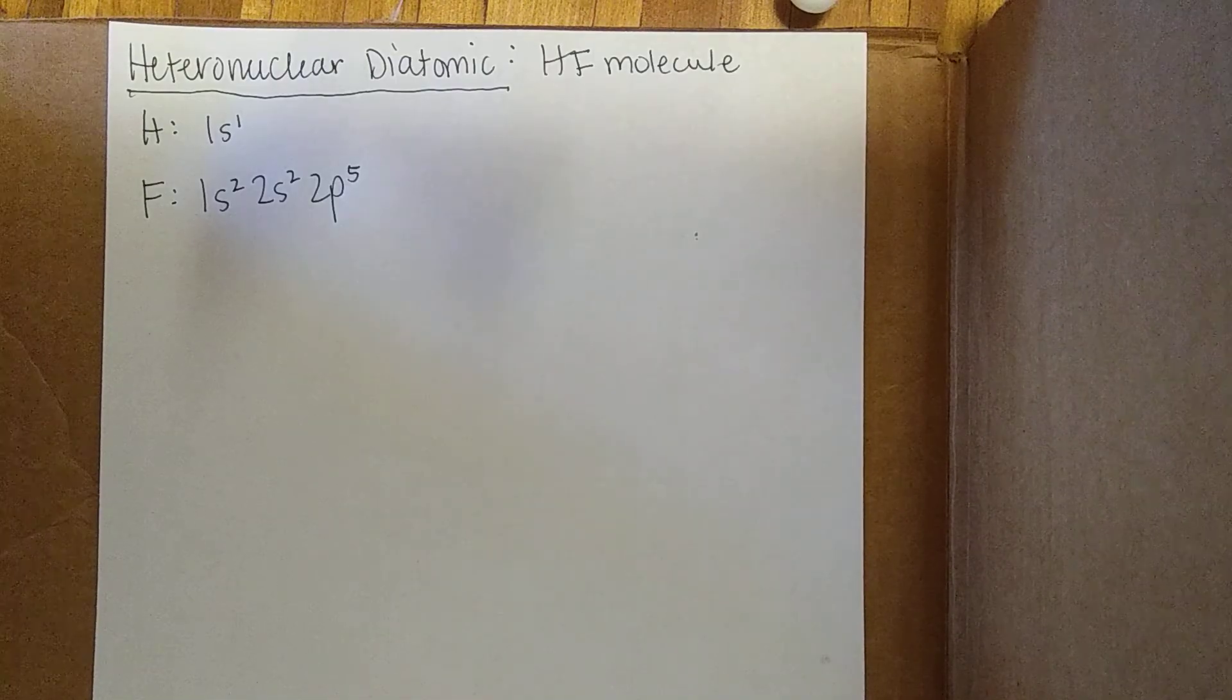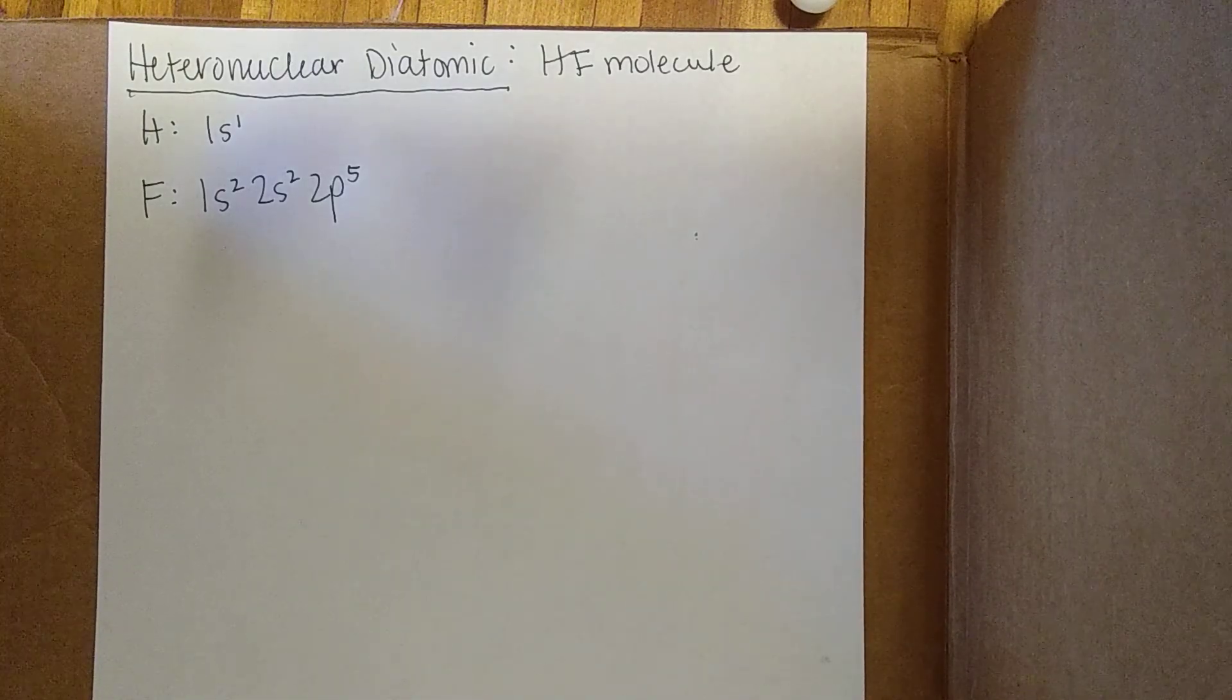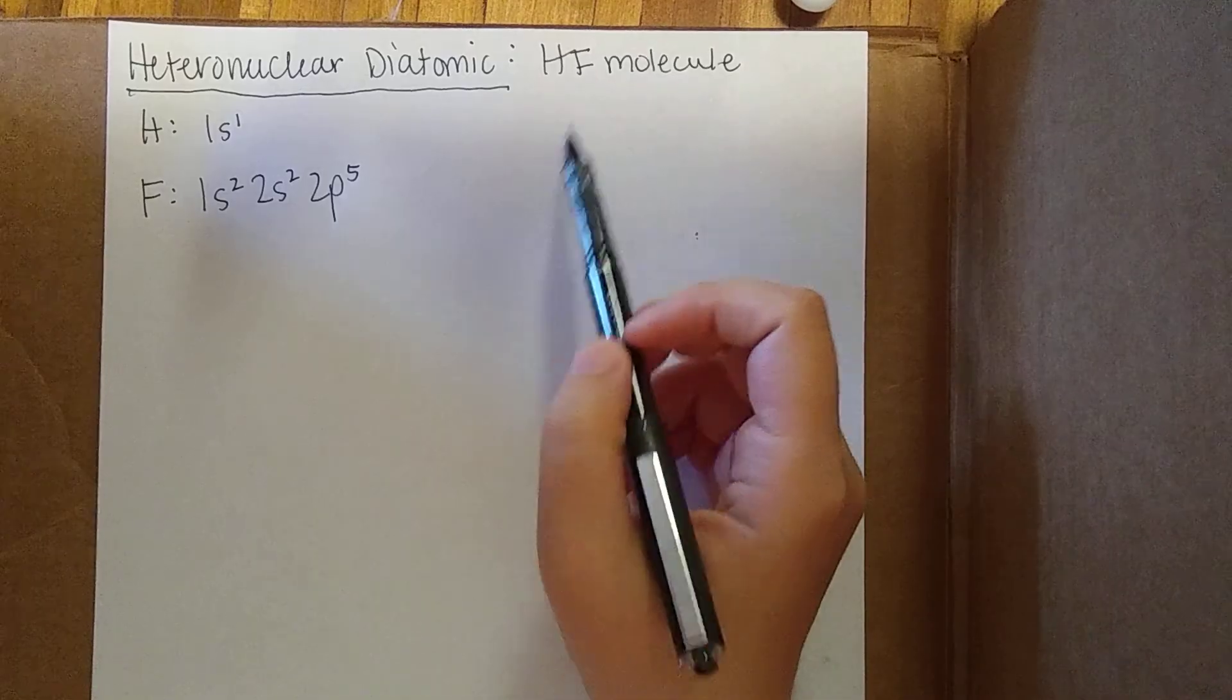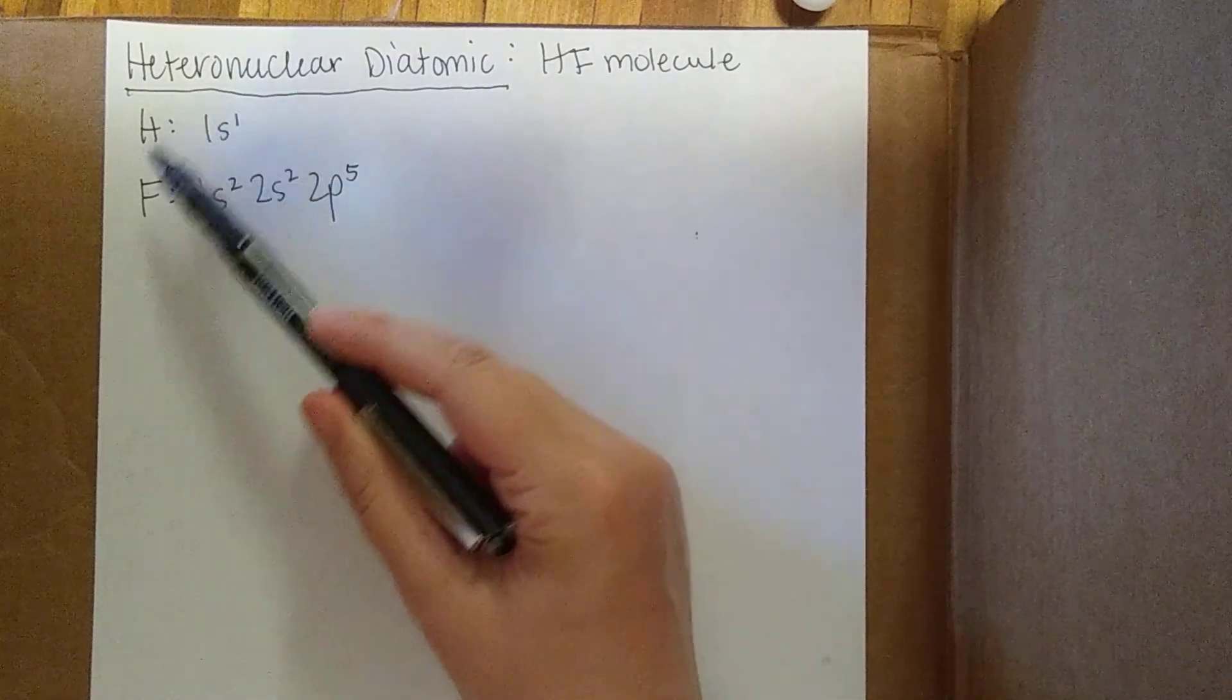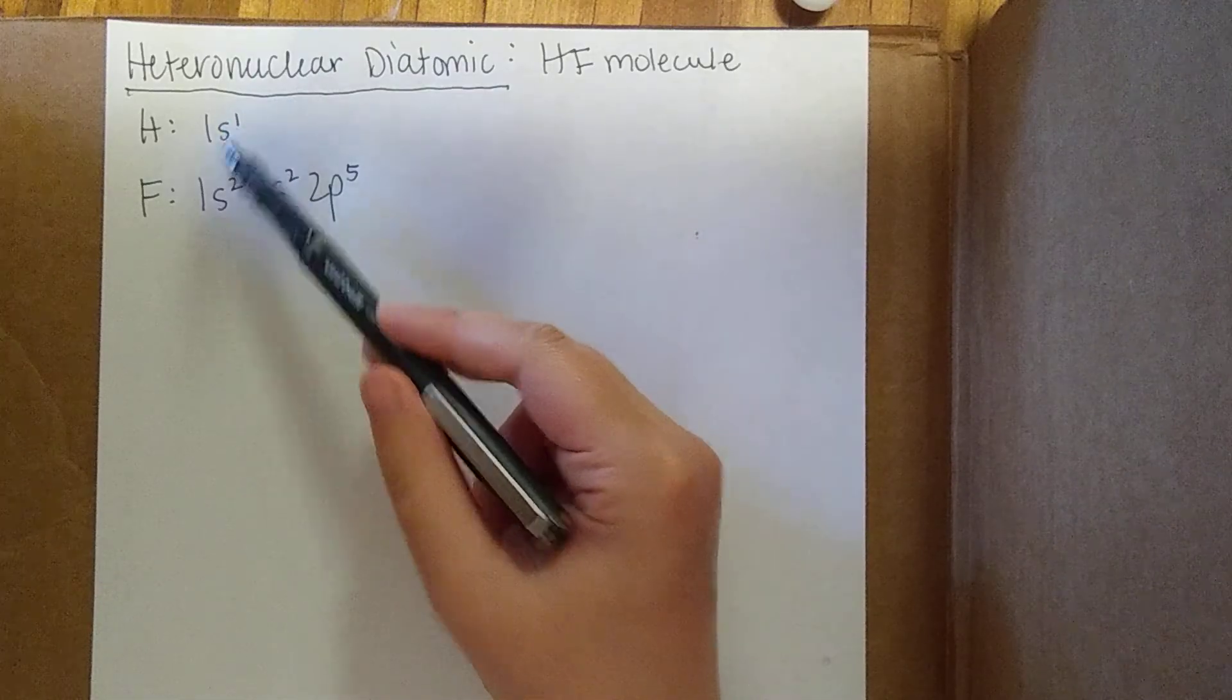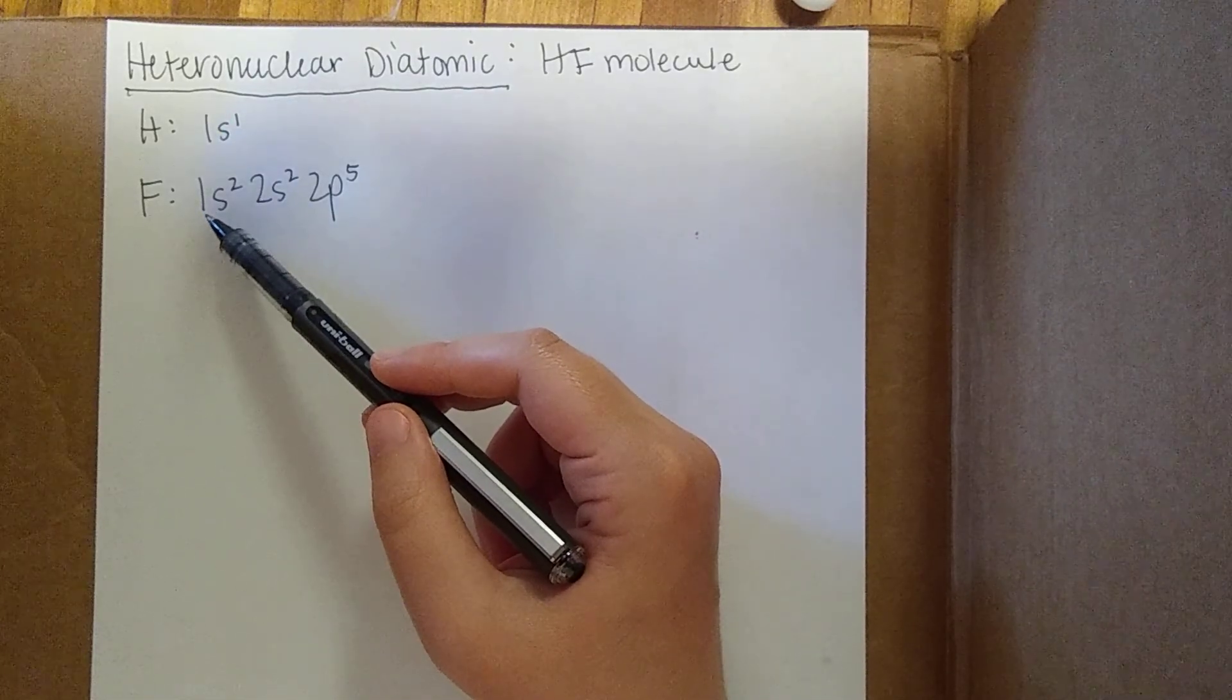So that makes it a little more complicated. There's just a few more things you need to know. We're going to be looking at this hydrogen fluoride molecule. I have the electron configurations of the hydrogen and the fluorine written here already.